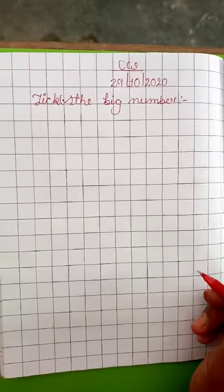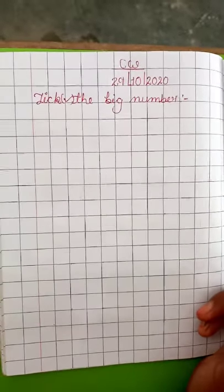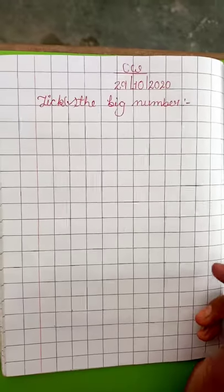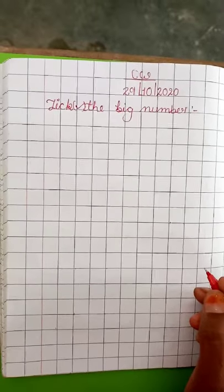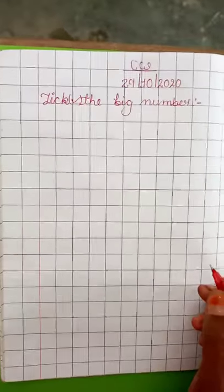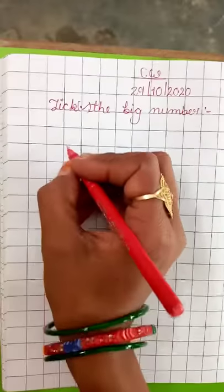Big means bada, small means chota. We will tick these numbers. So, let's start right here.